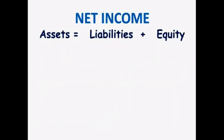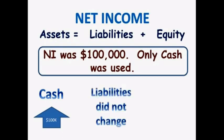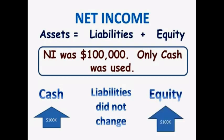We could have said that net income was $100,000 for the year instead of taking revenues and expenses separately. We would have said that assets increased by $100,000 because cash increased by $100,000. Liabilities were not affected. And equity increased because net income increased by $100,000. And our accounting equation balances again.